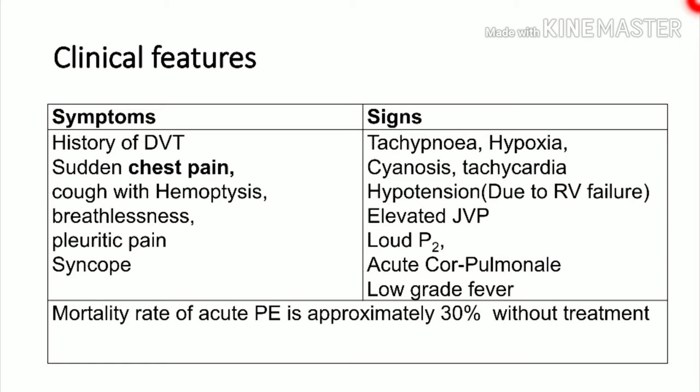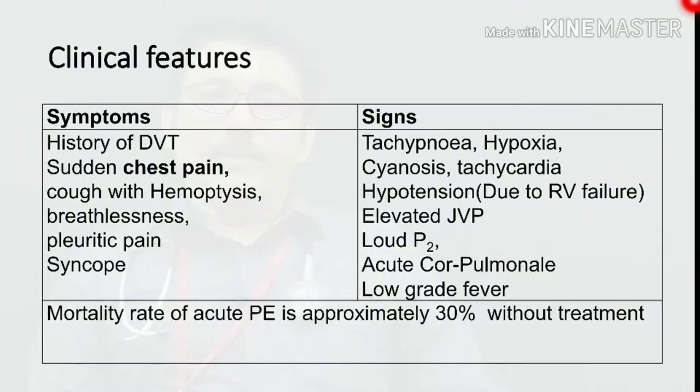Signs of acute pulmonary embolism include tachypnea, hypoxia, and cyanosis. On ECG, the commonest finding is tachycardia. Hypotension occurs due to RV failure in massive pulmonary embolism. JVP can be elevated, and a loud P2 is a clinical sign of acute cor pulmonale. Low-grade fever may be present due to tissue infarction and inflammation.